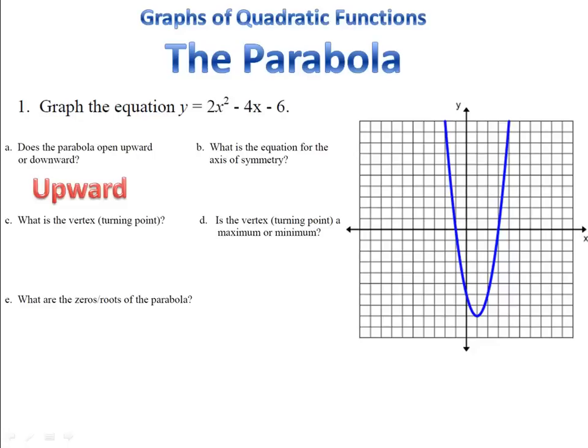What is the equation for the axis of symmetry? That's the imaginary line that cuts the parabola in half. The axis of symmetry always goes up and down. Here it is, and the equation for that line is x = 1.